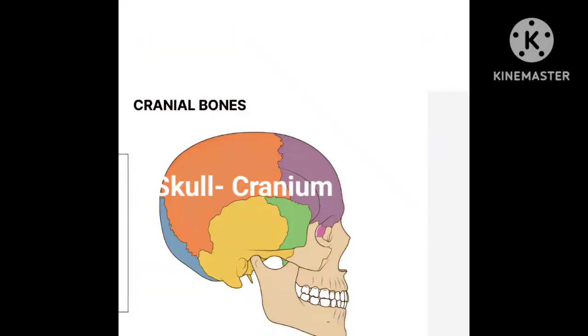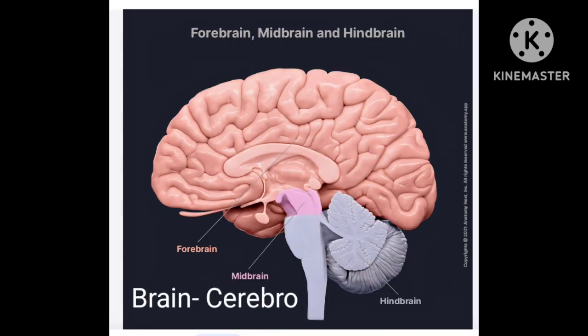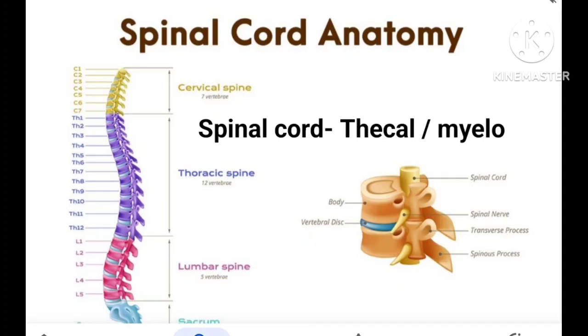Now let us move to the medical terms in this chapter. The skull is referred to as cranium, and the brain is referred to as cerebro. The cerebrum can also be called the forebrain. The cerebellum, pons, and medulla oblongata together are called the hindbrain, and the midbrain remains as midbrain. So the parts of the brain can be called forebrain, midbrain, and hindbrain.